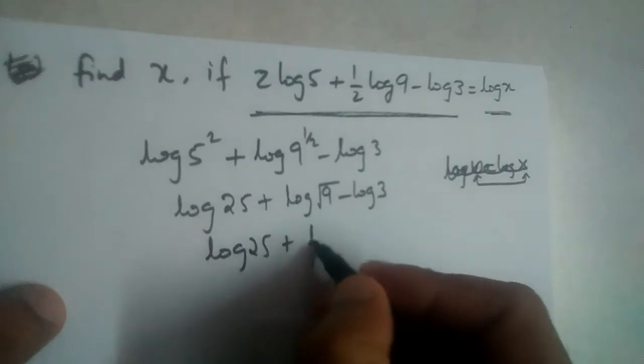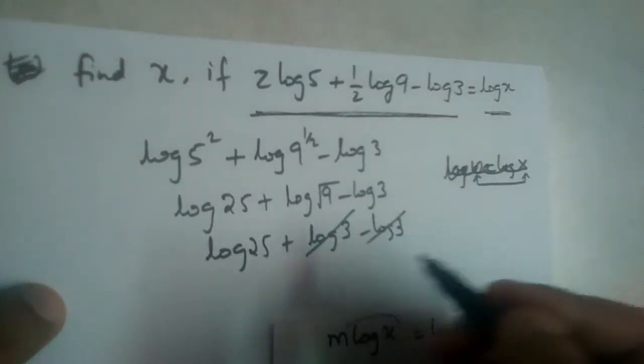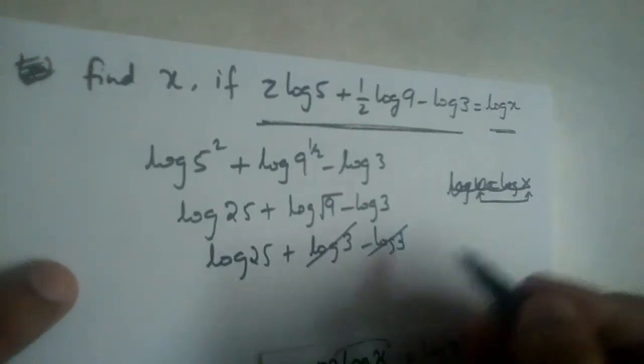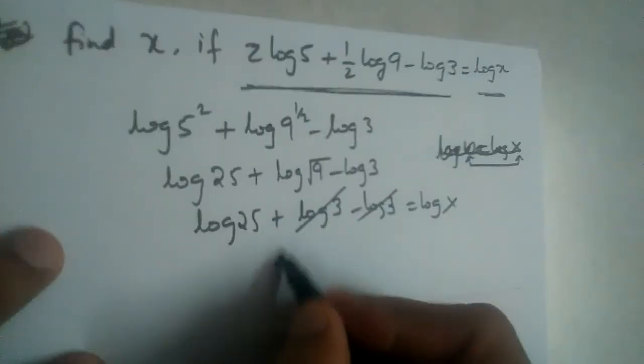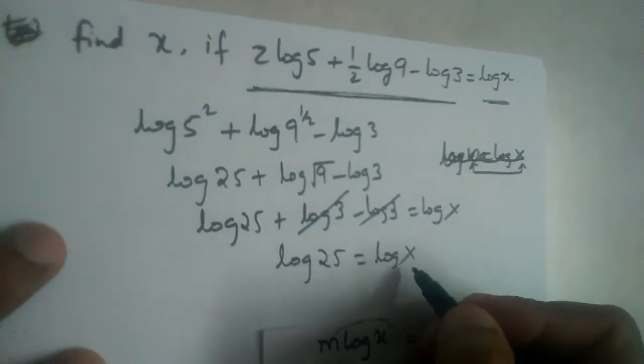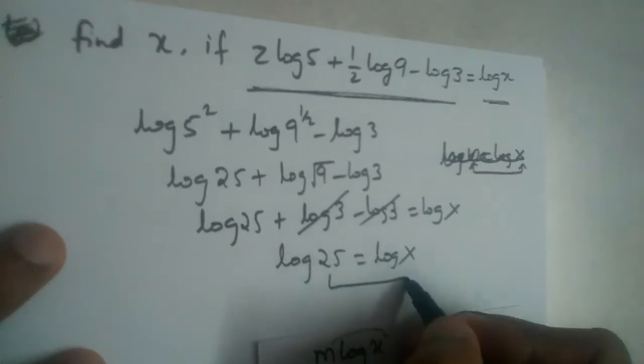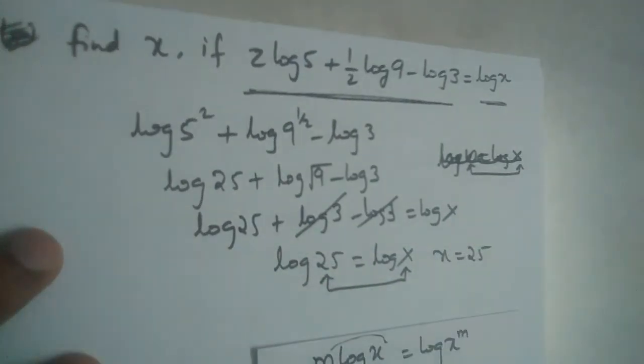So this is log 25 plus log 3 minus log 3. This and this will get cancelled - one is plus, one is minus. But this whole thing was equal to log x, which means log 25 is equal to log x. That means what is the value of x? 25.